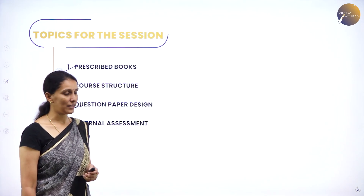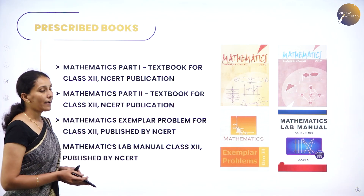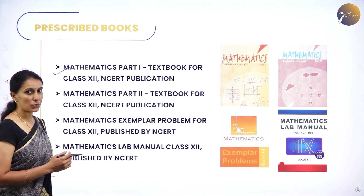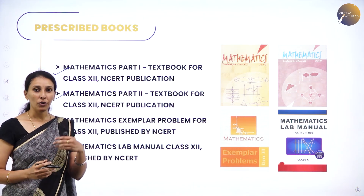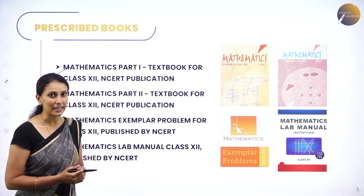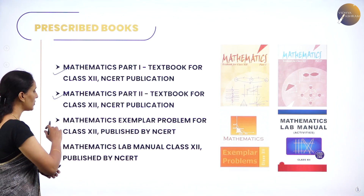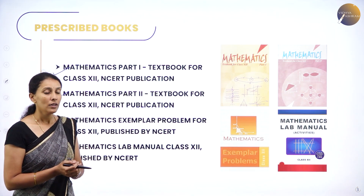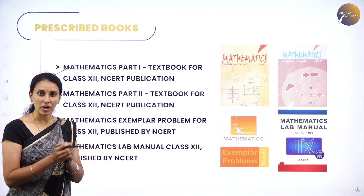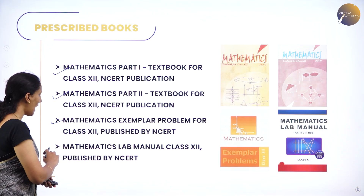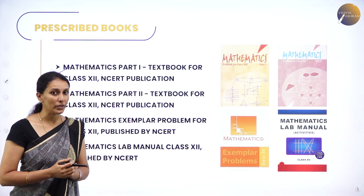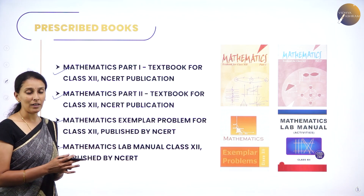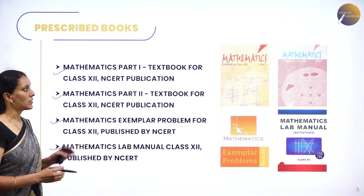By NCERT publications you have two textbooks: Mathematics Part One and Mathematics Part Two. You can also download the syllabus from the NCERT website. Along with that, you have an exemplar problem which contains advanced problems that help you solve your State CET as well as JEE Advanced. Next, you have a lab manual for Class 12, which will be used for internal assessment — it contains mathematical activities prescribed by NCERT.